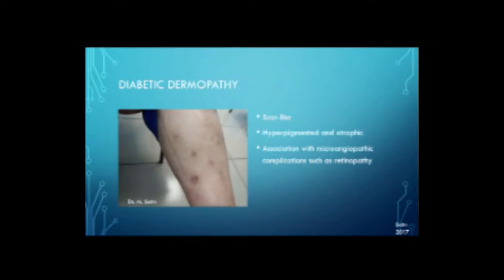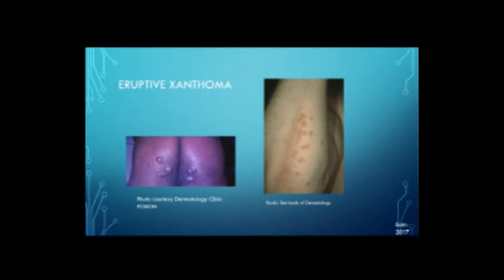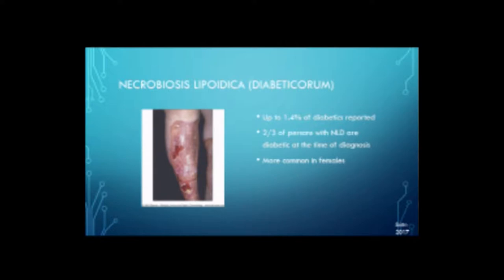Another thing we commonly see is diabetic dermopathy. These lesions tend to occur on the legs and shins — they are hyperpigmented and atrophic and are associated with microangiopathic complications such as retinopathy. Eruptive xanthoma is also seen in diabetics, especially if they have dyslipidemias. Necrobiosis lipoidica diabeticorum — NLD for short — occurs in up to 1.4% of diabetics. Two-thirds of people with NLD are diabetic at the time of diagnosis, and it's more common in females.